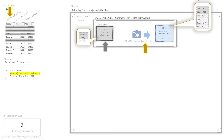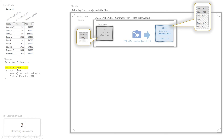CALCULATETABLE is going to return this temp table, and we're going to take it and put it in a variable to keep our code a little bit cleaner. When I type in VAR, I'm saying: create a variable called VR_customers_CY — CY for current year — and stick that temp table into it so we can pull it up later.